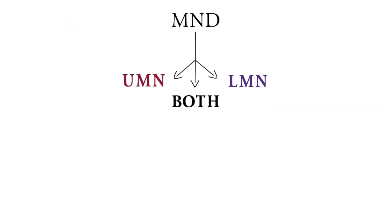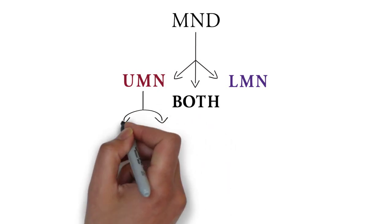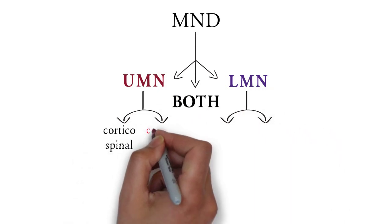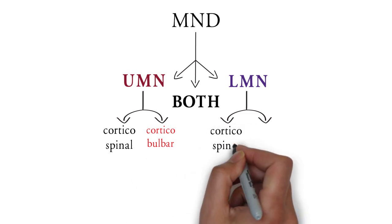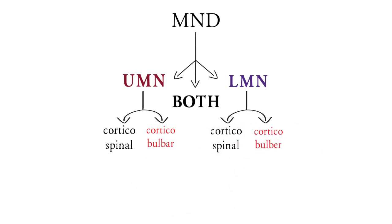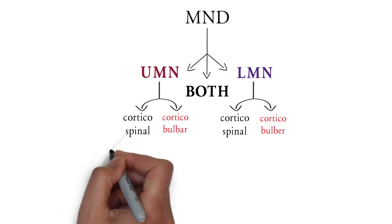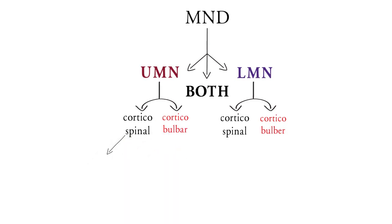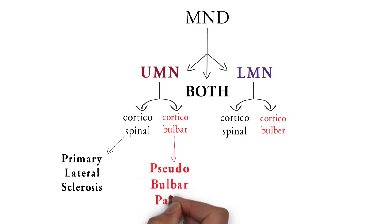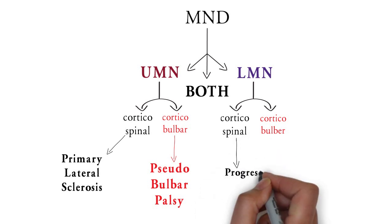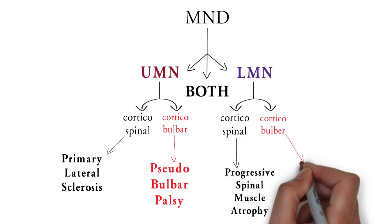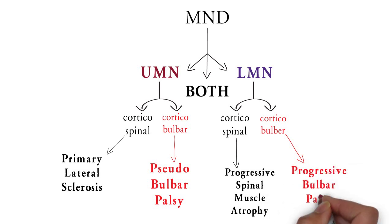Before going to management, let's come back to our classification. All the types we studied can be placed in this classification. In both UMN and LMN types, there will be one disease from the corticospinal tract and one from the corticobulbar tract. The UMN type involving the corticospinal tract is primary lateral sclerosis, and the corticobulbar tract is pseudobulbar palsy. The LMN type involving the corticospinal tract is progressive spinal muscular atrophy, and the corticobulbar tract is progressive bulbar palsy. In the mixed type, we place ALS — amyotrophic lateral sclerosis.